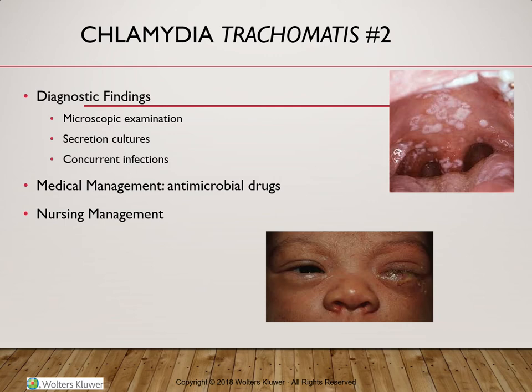For diagnosis, we examine under the microscope and culture the secretions to identify the microorganism. There is a quick test kit able to identify the microorganism in about 15 minutes. For medical treatment, antimicrobial drugs are used. The treatment can be a single oral dose of azithromycin (Zithromax), or a seven-day regimen of doxycycline (Vibramycin) taken twice a day. Alternative drugs include erythromycin, ofloxacin, or levofloxacin.